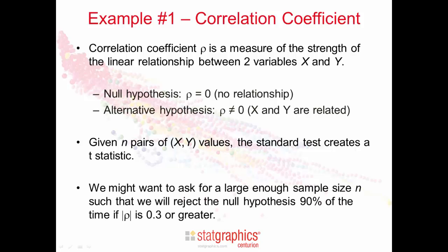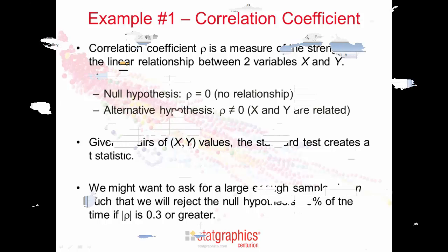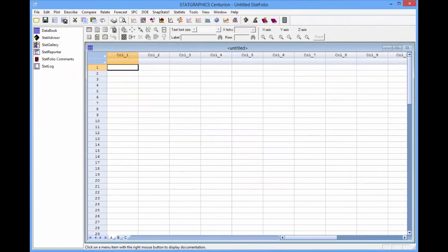We might ask ourselves, how large a sample size do I need, such that I'll reject the null hypothesis of no relationship 90% of the time, if the absolute value of the correlation is 0.3 or greater?